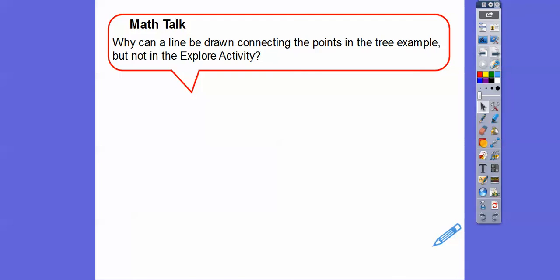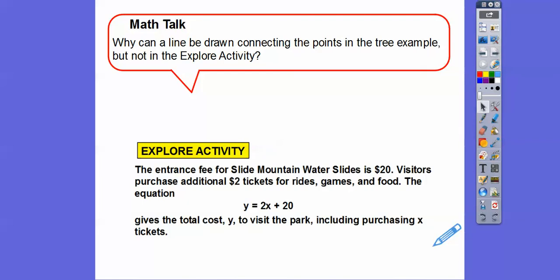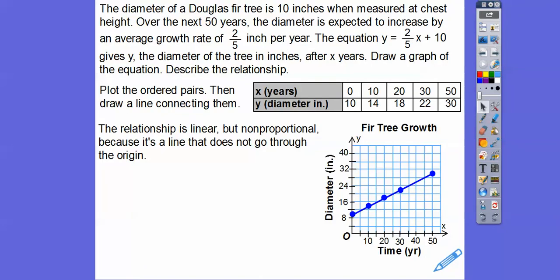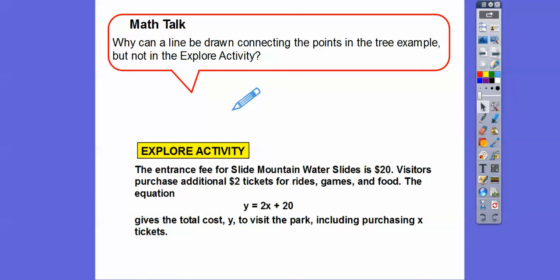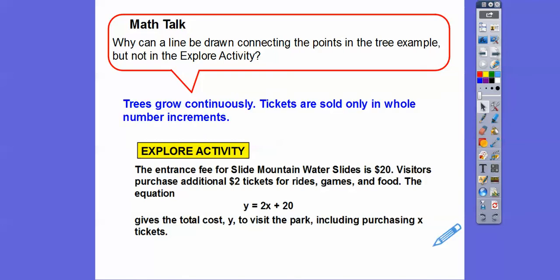Why can a line be drawn connecting the points in the tree example but not in the Slide Mountain activity? In the Slide Mountain example, x represented the number of tickets, and we can't buy a decimal of a ticket — only whole numbers, so we can't connect the points. But a tree continuously grows — it grows through all values, like 2.5 years being a valid point. Trees always grow, so we connect the dots. Tickets are only sold in whole number increments.